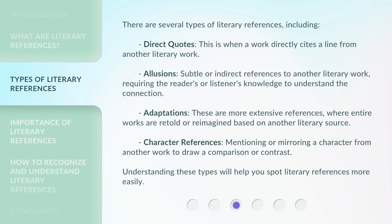There are several types of literary references, including direct quotes — this is when a work directly cites a line from another literary work — and allusions, which are subtle or indirect references to another literary work, requiring the reader's or listener's knowledge to understand the connection.